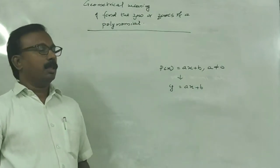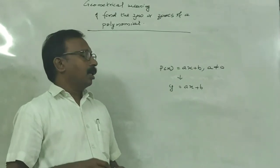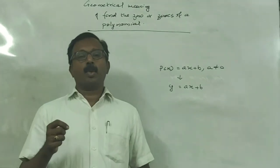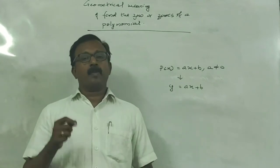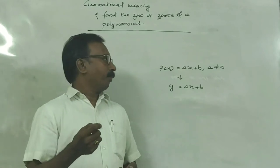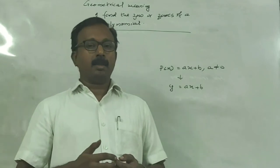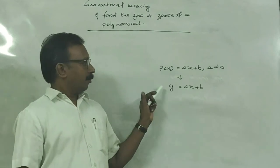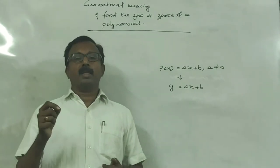We draw the graph of y = ax + b. And how we can find its zero is: find the x-coordinate of the point where the graph of y = ax + b intersects the x-axis. How can we find the zero of a linear polynomial from the graph?